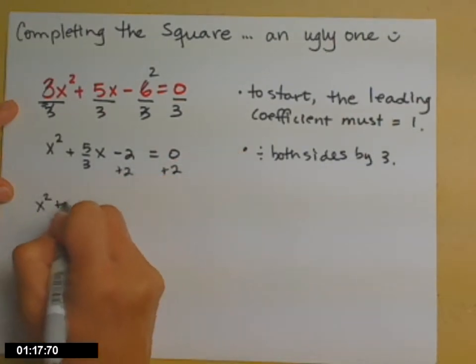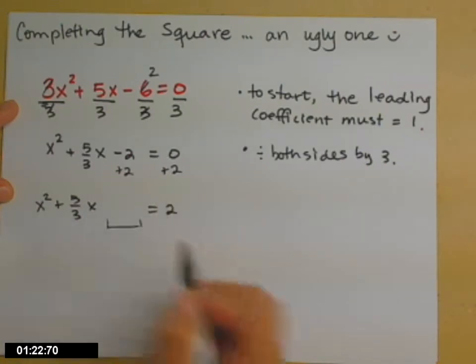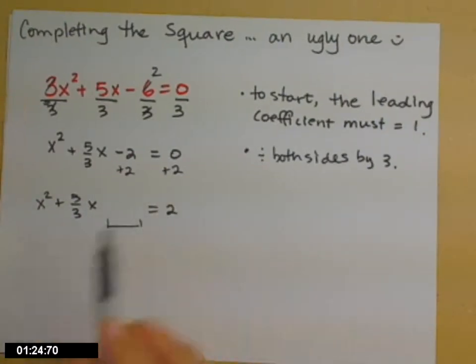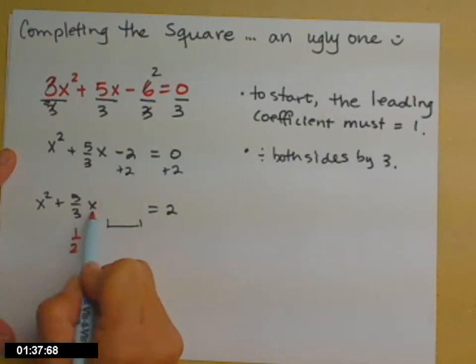So in this space that we've left, I need to put the correct constant term so that I will get a perfect square trinomial on the left-hand side. So what that constant term is, is half of the linear term, so here's my linear term because it's x to the first, half of the linear coefficient squared.